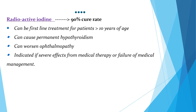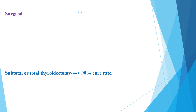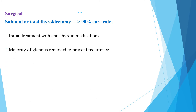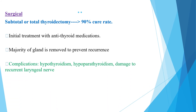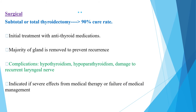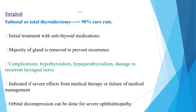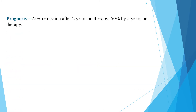Surgical subtotal or total thyroidectomy has a cure rate of around 90 percent. Initial treatment with anti-thyroid medication is preferred before surgical intervention, and the majority of the gland is removed to prevent recurrence. Complications include hypothyroidism, hypoparathyroidism, and damage to the recurrent laryngeal nerve. Orbital decompression can be done for severe ophthalmopathy not responding to high-dose steroids.